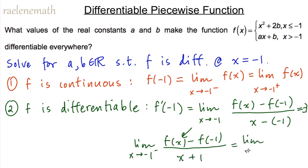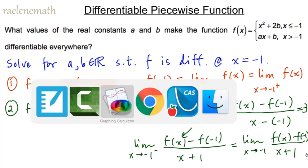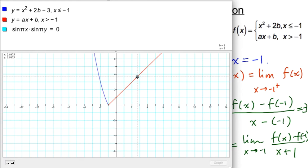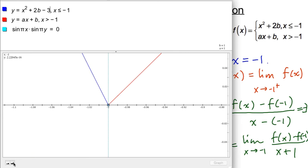Let's look graphically at what happens with our piecewise function if we pick some random values for a and b. Here I've set up the graph with a and b initially both equal to one, and we see the function is not continuous. We could lift the red graph or pull the blue graph down by three spaces. Pulling the blue one down three spaces makes the graph continuous, but zooming in at x equal to negative one, we don't get a single tangent line — we get two tangent lines each with finite slopes. So these values of a and b didn't work.